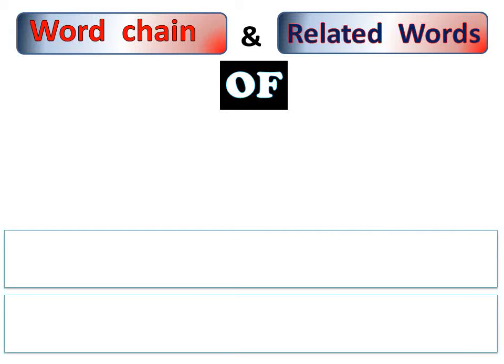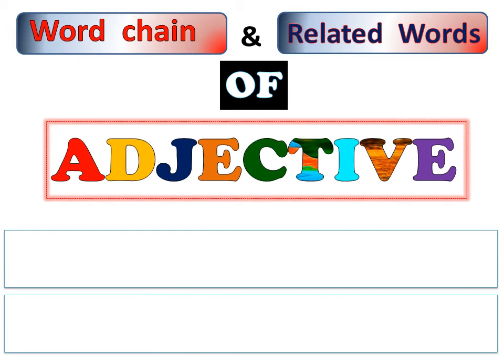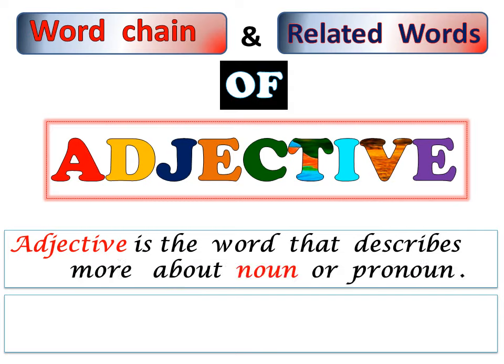Welcome friends, as a language study we will learn about adjectives and related words of adjectives. First, let me explain what an adjective is. Adjective is the word that describes more about noun or pronoun. The word which provides specific information about the noun or pronoun in the sentence.